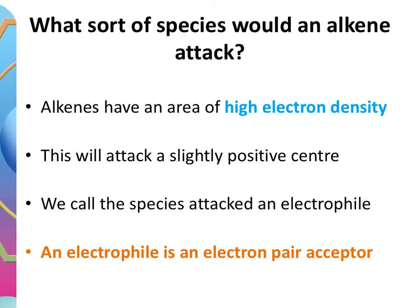The species that's attacked is called an electrophile, and the AQA definition of an electrophile is an electron-pair acceptor. A nucleophile is an electron-pair donor; an electrophile is an electron-pair acceptor. In nucleophilic substitution there was also an electrophile present — the haloalkane was accepting the electron pair — so you always have both an electrophile and a nucleophile in a reaction.